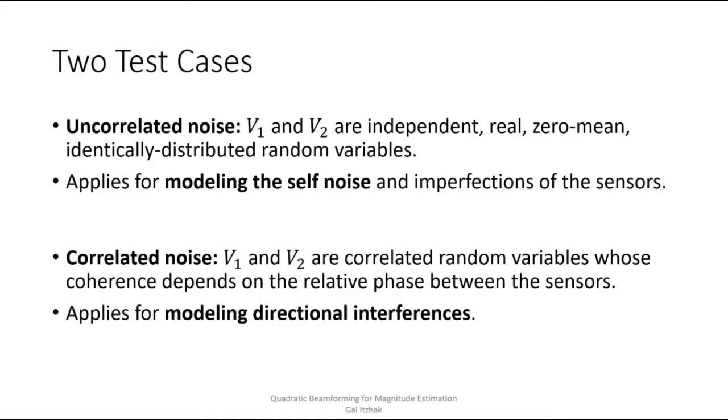Okay, so now let's focus on two distinct test cases. The first one is the uncorrelated noise case, which applies for modeling the self-noise and imperfections of the sensors in the array. And the second one is the correlated noise case, which applies for modeling directional interferences, which may be impinging on the array.